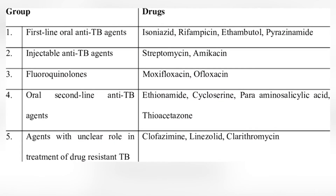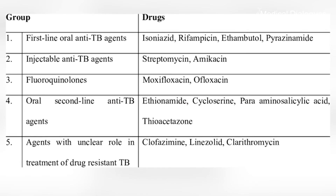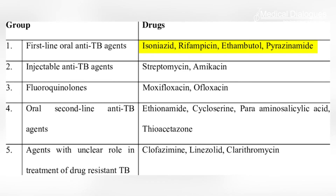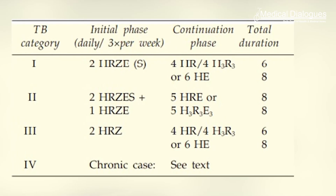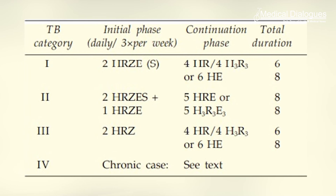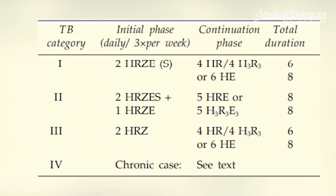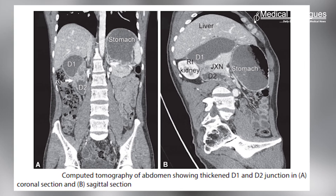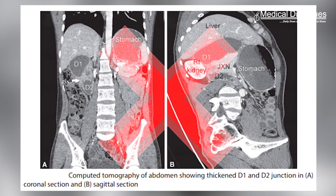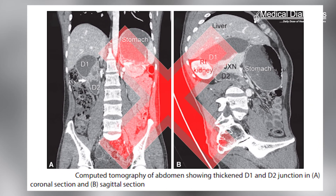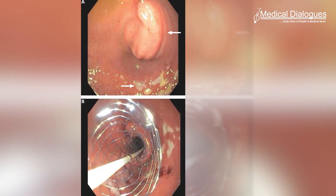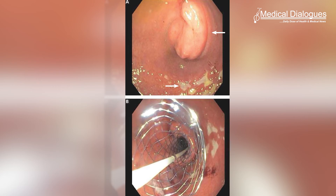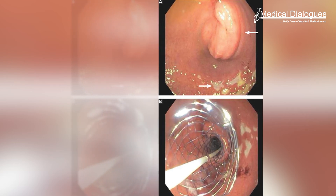The patient was initiated on anti-tubercular therapy. The intensive phase included rifampicin, isoniazid, pyrazinamide, and ethambutol for two months, followed by a continuation phase of rifampicin and isoniazid for eight months. The patient's symptoms improved; at the end of treatment there were no features of gastric outlet obstruction and he had gained weight. Follow-up endoscopy was grossly normal, revealing only mild deformity at the D1-D2 junction without any obstruction.